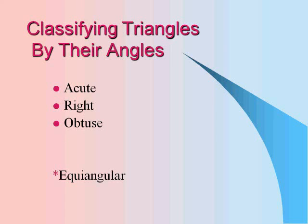Then you can classify triangles also by their angles. So you would call them acute, right, obtuse, and you can also call them equiangular.